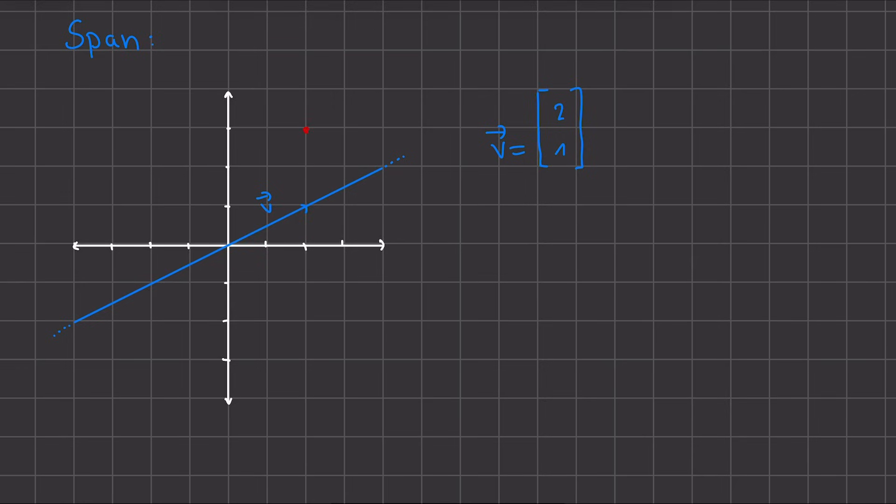Now, if we add another vector, like this u here, we now have an additional direction we can move in. And the span of these two vectors would be our entire R². So the entire space.